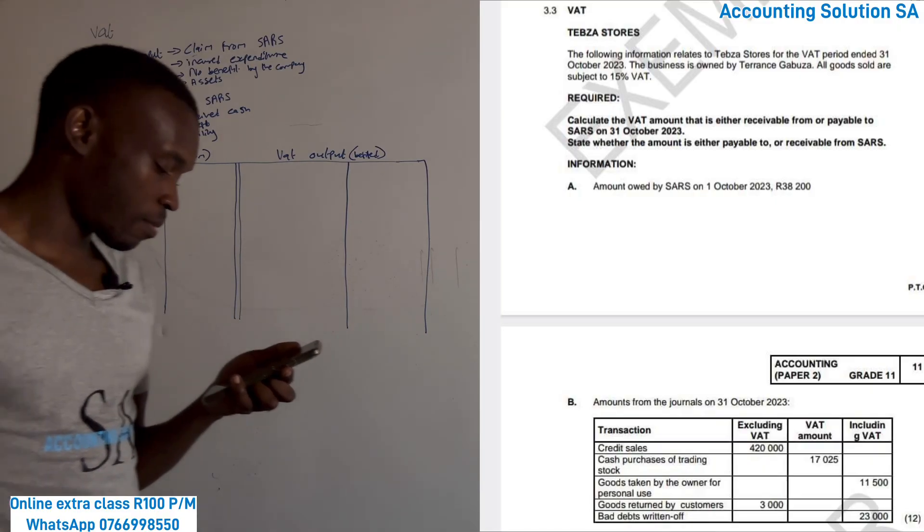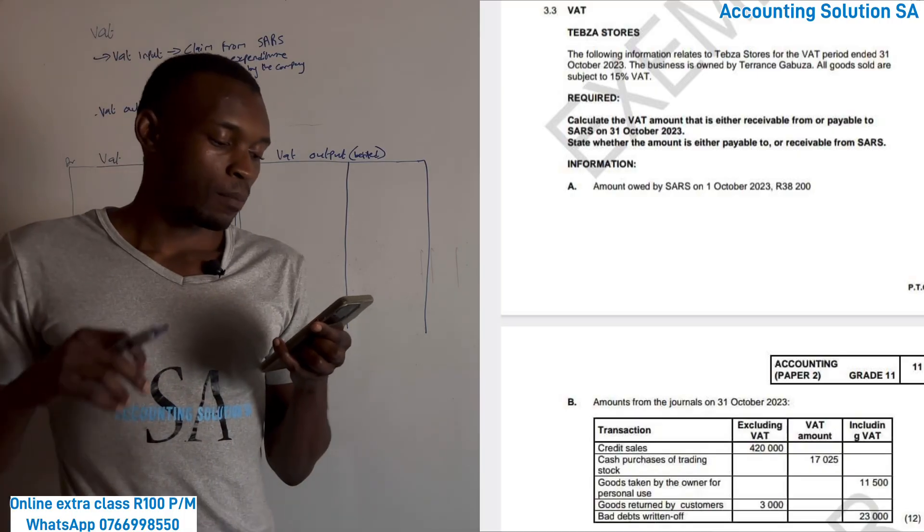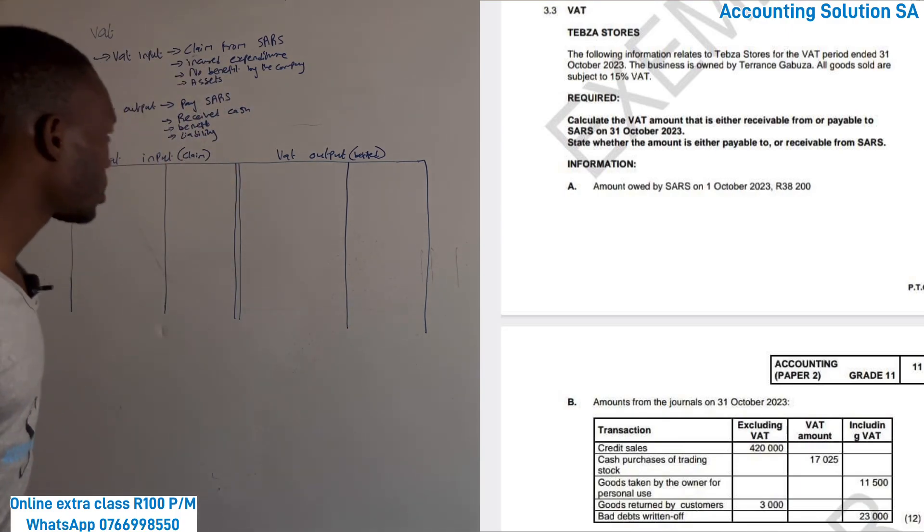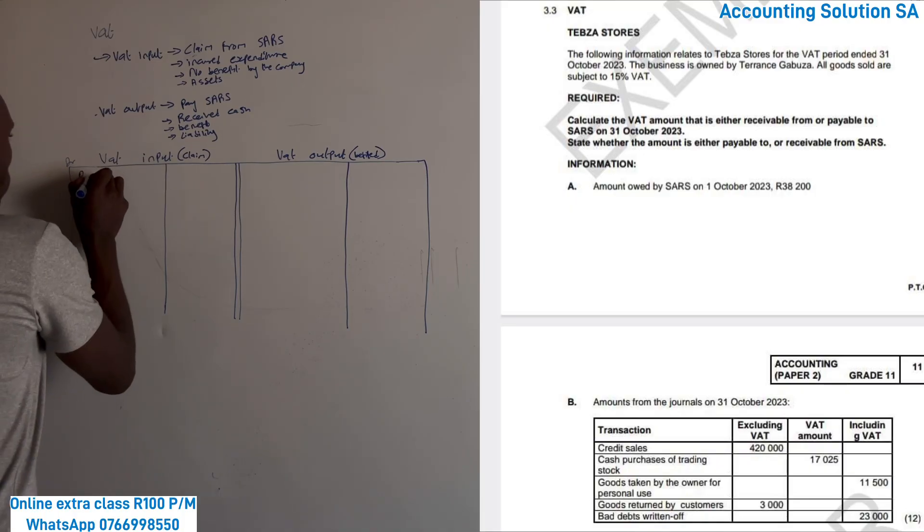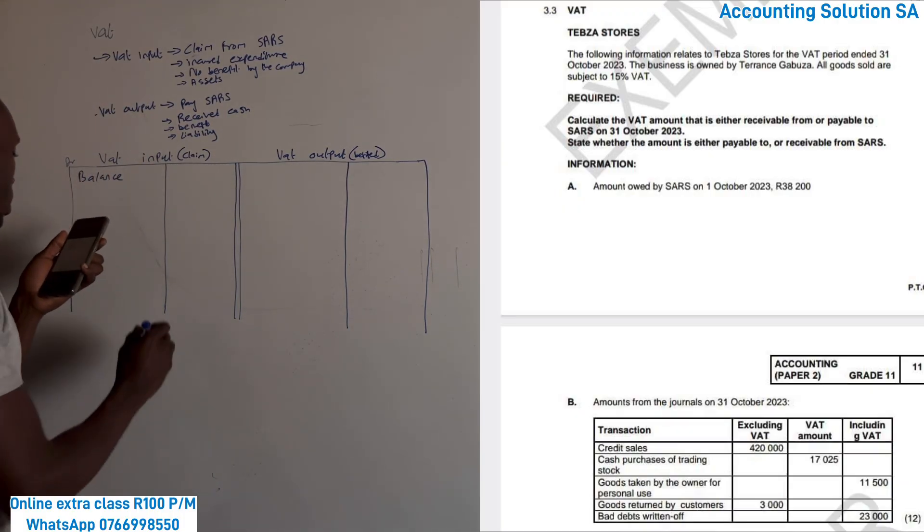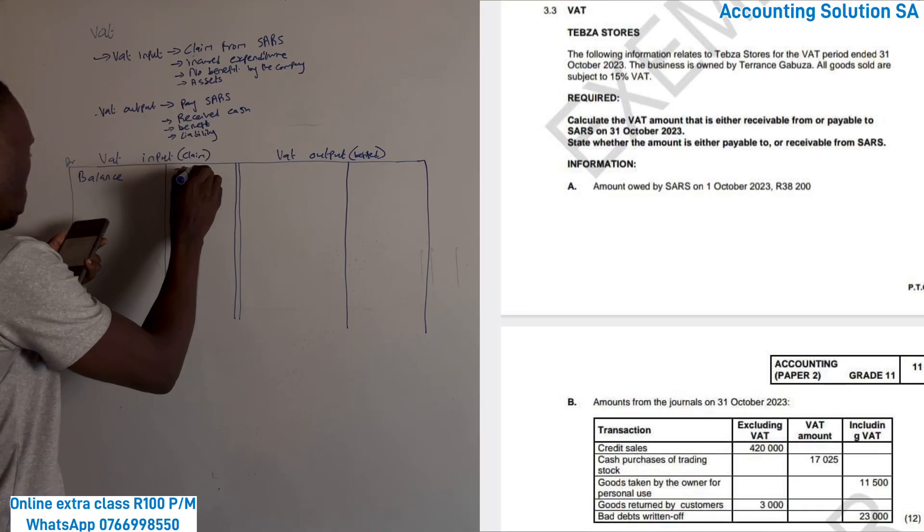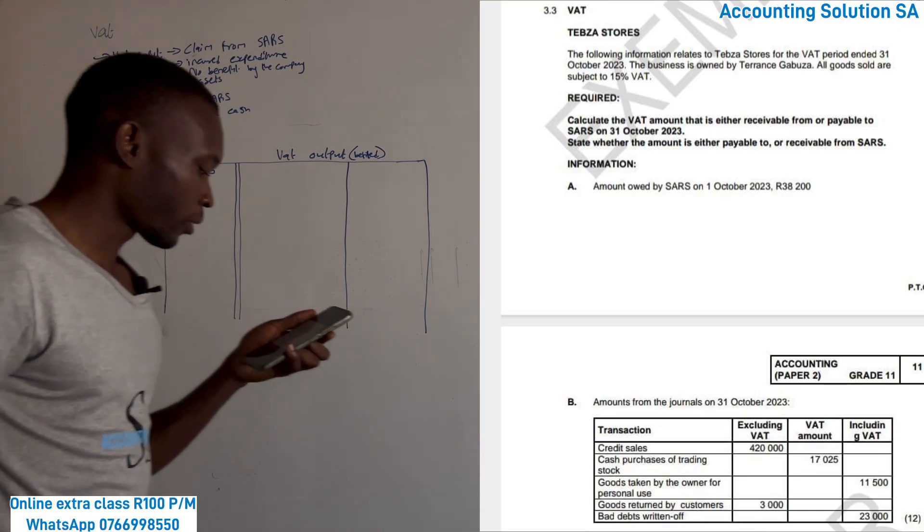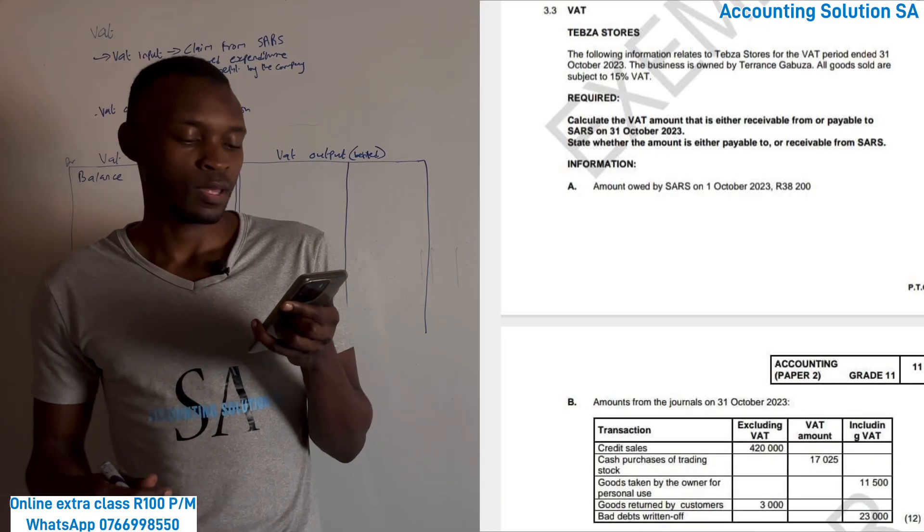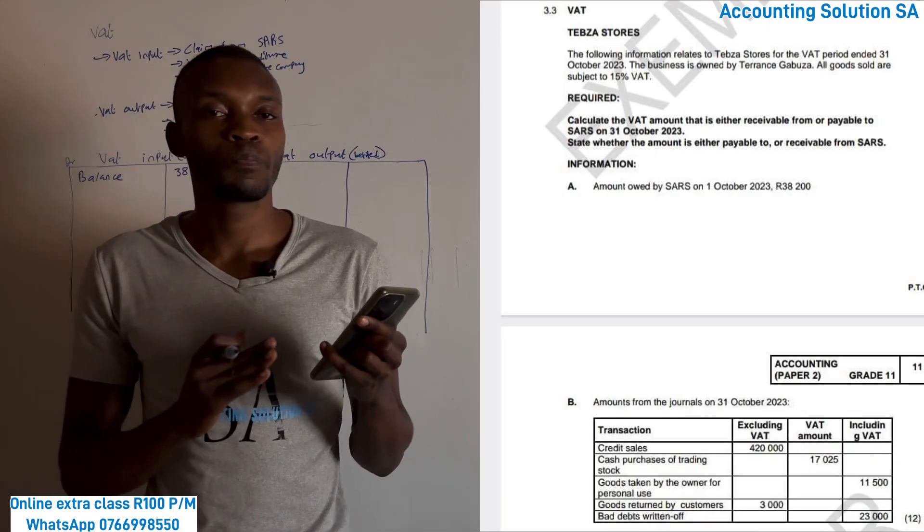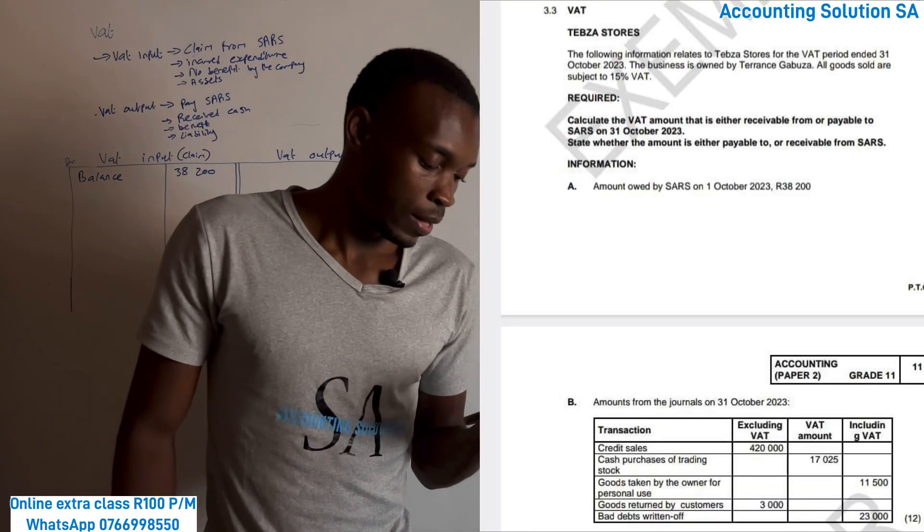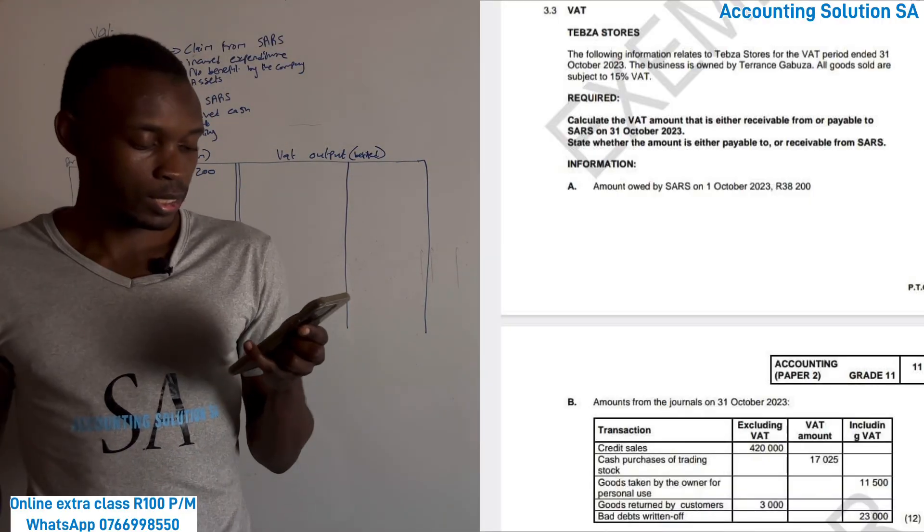Information number B, that's what we're going to deal with - transactions. Amount owed by SARS. SARS owes us. If SARS owes us, which means we are claiming, our balance will be this side. But if we owe SARS, the opening balance comes this side. Owed by SARS is 38,200. Now we have excluding column, VAT amount, and inclusive. We only focus on VAT amount. Exclusive and inclusive will just help us calculate VAT amount. Let's take transaction number one: credit sales.